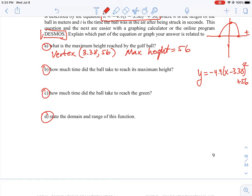How much time did the ball take to reach maximum height? We know that the maximum height at 56 took a time—that's the other coordinate. The time is equal to 3.38 seconds. That one coordinate gives us those two amounts.